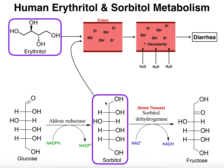Sorbitol can be produced naturally from glucose via aldose reductase and then dehydrogenated in some tissues, but you can also get sorbitol from the diet as an artificial sweetener. If you have excess sorbitol, not all of it can be metabolized by certain cells such as the seminal vesicles. That excess sorbitol ends up in the lumen of the colon, increases osmolarity, and to balance the osmolarity between the lumen and the surrounding tissues, water osmoses in — producing diarrhea. Too much artificial sweetener generally causes both flatulence and diarrhea.